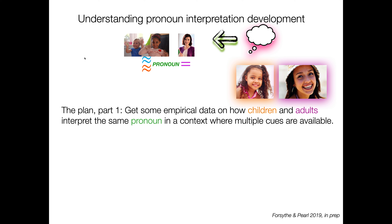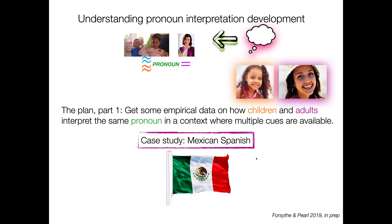When we want to understand the development of pronoun interpretation, the plan today comes in two basic parts. The first part is to get some empirical data on how children and adults interpret the same pronoun in a context where multiple cues are available. We're going to use a case study of data from Mexican Spanish.